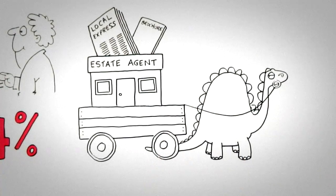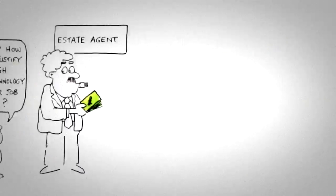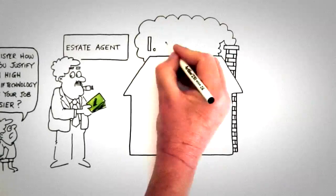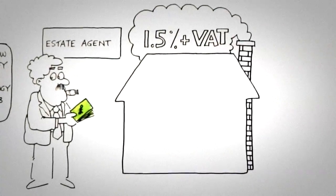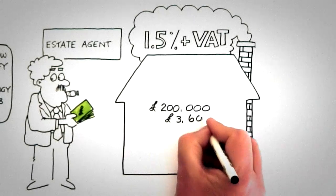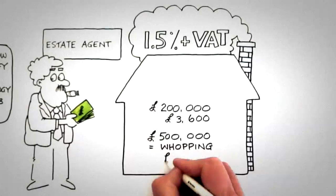But despite this, the cost of selling your home in real terms has risen. Traditional estate agents' commission is usually around 1.5% plus VAT. That means on a £200,000 home you will pay £3,600, whilst on a £500,000 home it's a whopping £9,000.